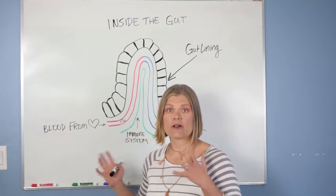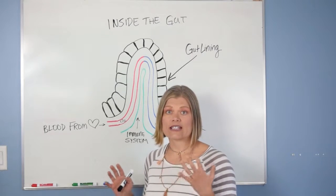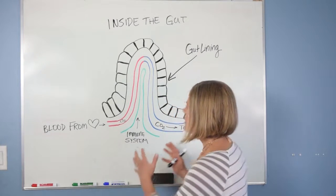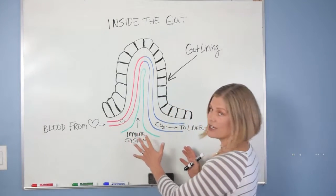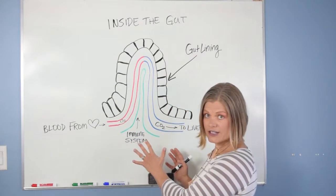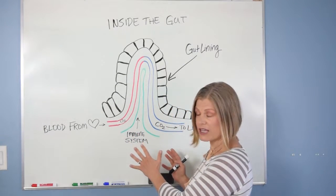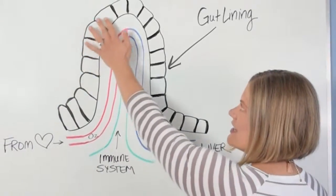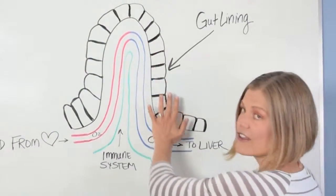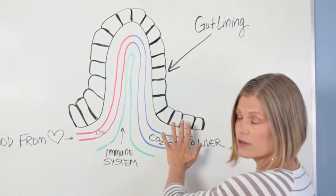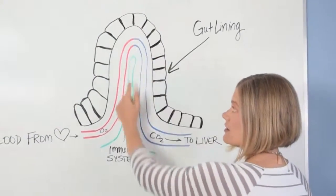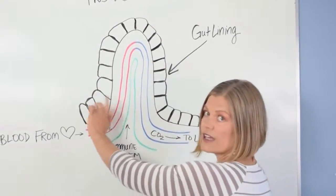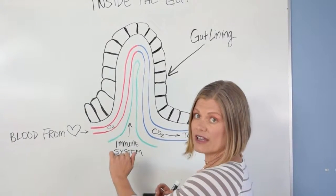First, I want to show you what's going on with the digestive system lining. Here we are in front of my whiteboard. What I've drawn for you is the digestive system lining — we have all of our cells nice and tight together, that's normal. And there are all these little humps in your lining; these are called villi.